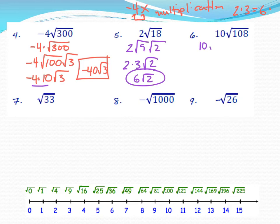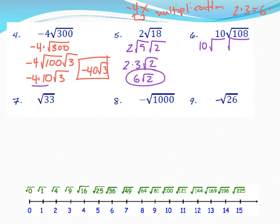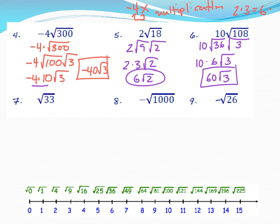Number 10: 10√108. Find two factors of 108 — it's between 100 and 121 on the number line. Does 100 go in? No. Does 81 go in? No. Does 64 go in? No. Does 36 go in? Yes — 108 = 36 × 3. Split: √36 × √3. The square root of 36 is 6. Multiply: 10 × 6 = 60. Answer: 60√3.